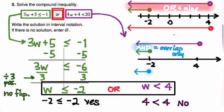We're still not done — we have one last step: expressing the answer in interval notation. Interval notation is a communication method for expressing a final answer by specifying how far to the left and right on the number line the set goes, and whether either endpoint is included. For our OR problem, the red set goes from negative infinity on the left to 4 on the right.